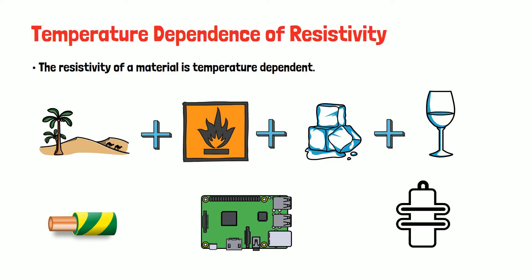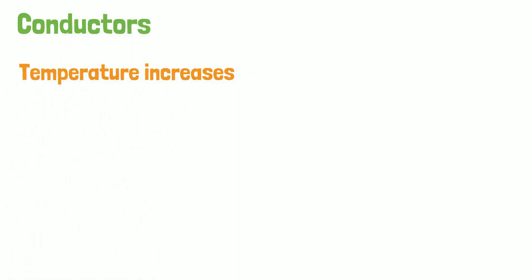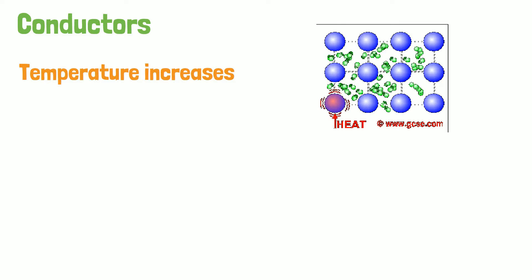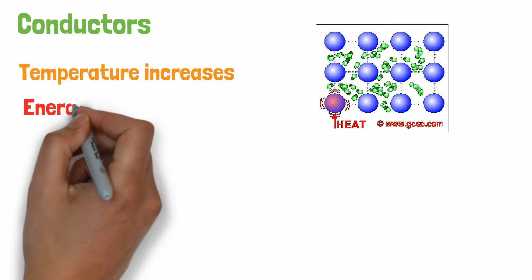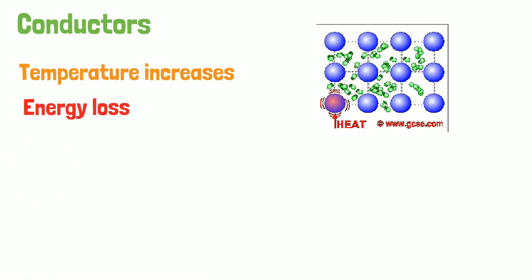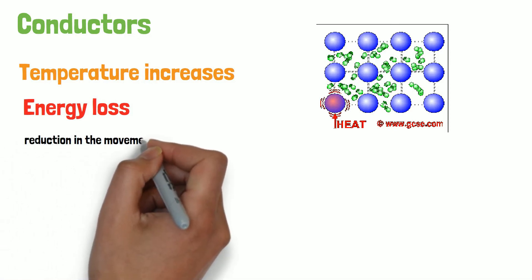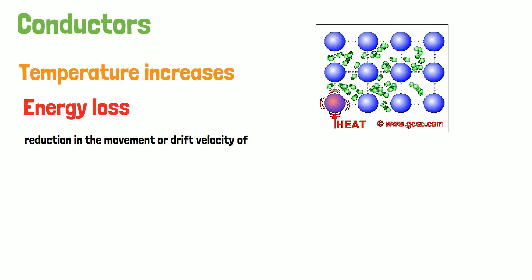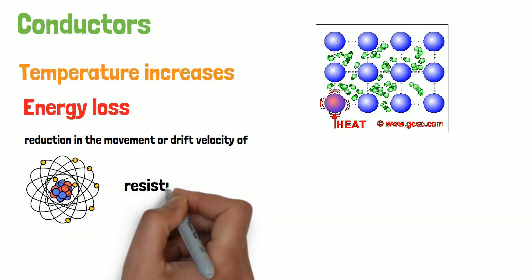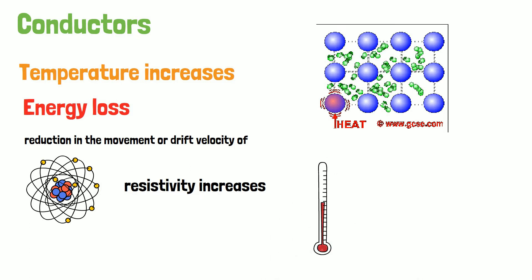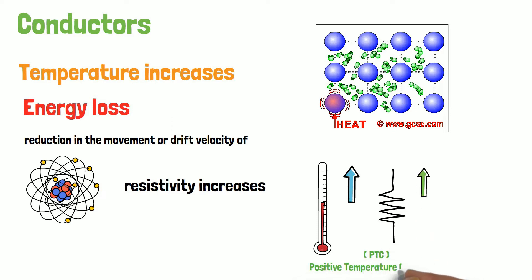In conductors, as temperature increases, the atoms start vibrating heavily, leading to collisions of free electrons with other electrons. This collision causes a loss of energy from the free electrons, which are responsible for current flow. The reduction in drift velocity of the electrons due to energy loss increases the resistivity of the conductors, especially metals. As the temperature increases, the resistivity of the metal increases as well.